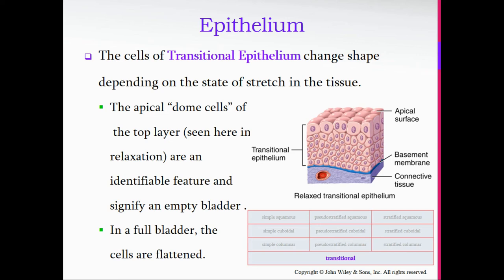The cells of transitional epithelium change shape depending on the state of stretch of the tissue. When the tissue is relaxed, the cells have more of a cuboidal shape. When the cells are under tension and stretched out, they flatten and have more of a squamous shape. The apical dome cells of the top layer seen in relaxation are an identifiable feature and signify an empty bladder. The bladder is one of the classic places we find transitional epithelium because of its incredible ability to stretch — when empty it is very small, but when full it expands much larger to hold more urine.